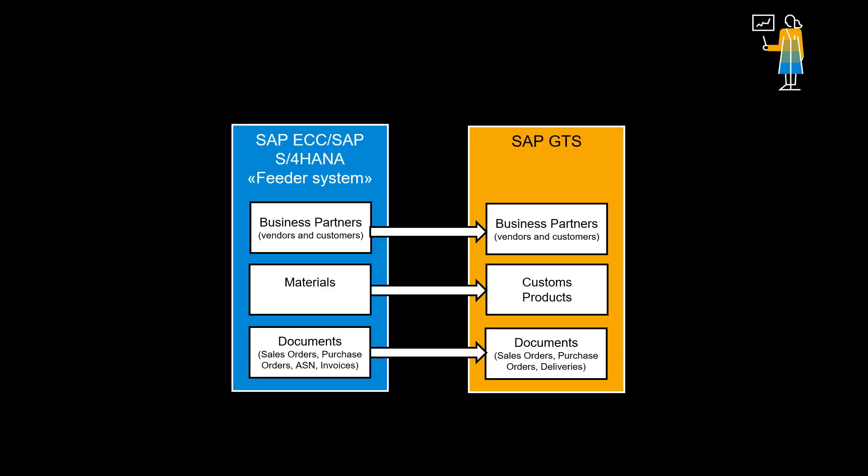Before we run the demo, we would like to explain a few key concepts regarding SAP Global Trade Services. Technically, SAP GTS is to be considered a sidecar to your ERP system. GTS can connect to multiple ERP systems, even non-SAP ERP systems. Systems connecting to GTS are sometimes referred to as feeder systems. They are not limited to ERP systems only.